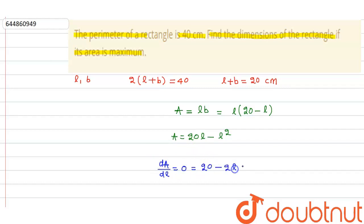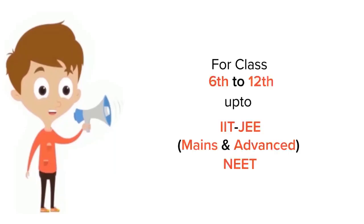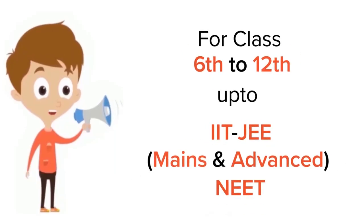That means l is equal to 10 centimeters, and b will be 20 - l, that means b is equal to 20 - 10 = 10 centimeters. That means the dimension of the rectangle is 10 centimeters and 10 centimeters. Thank you. For class 6 to 12, IIT-JEE and NEET level,